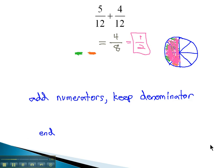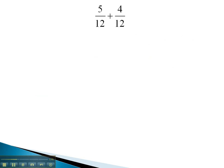Let's take a look at some examples and see how they work out. 5 twelfths plus 4 twelfths. Both have a common denominator, so we will add the numerators. 5 plus 4 is 9, and keep the denominator of 12.